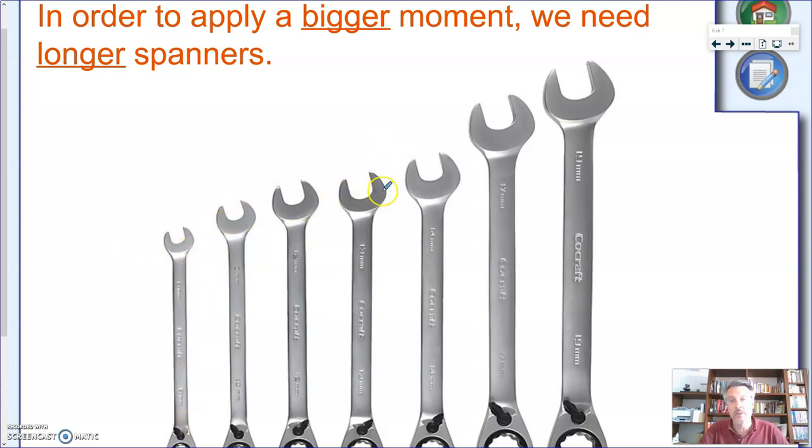So if you have a set of spanners, you will see that those with a smaller opening are shorter. And as they increase in size, that means you need a bigger moment to get the same effect, then you need a longer spanner.